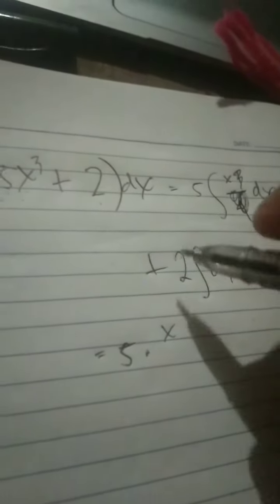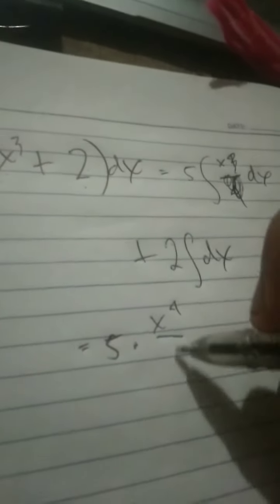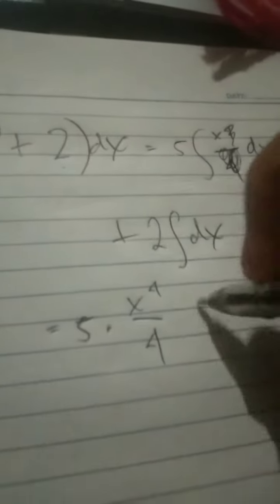5 times x raised to 4. Yeah, 3 plus 1 equals 4, over 4. And then we add 2.